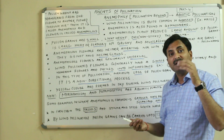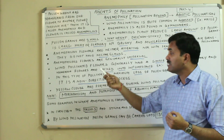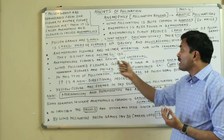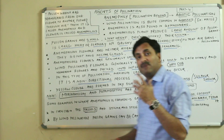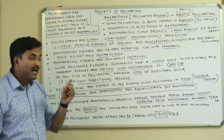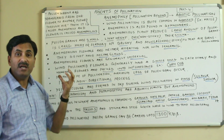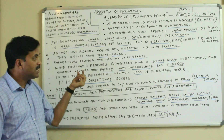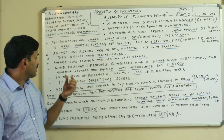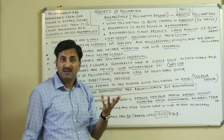Anemophilous flowers are generally unisexual — if the flower were bisexual, self-pollination might occur. Wind-pollinated flowers generally have a single ovule inside each ovary, and numerous flowers are packed into an inflorescence. A good example is the corn cob of maize, where various flowers form a compact inflorescence.